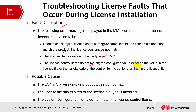Additional error messages include: the license control items do not match, the configured value exceeds the value in the license file, or the validity date of the control item is earlier than in the license file. The possible causes are: a given serial number issue, a version-related problem, product types do not match, license file expired, license file type is incorrect, or the system configuration items do not match the license control items.